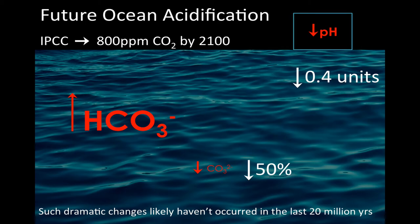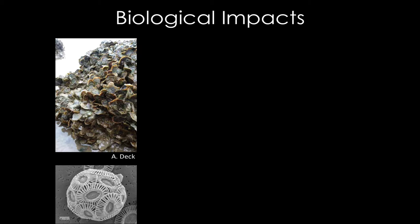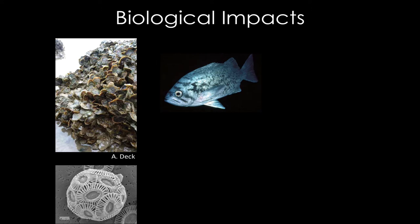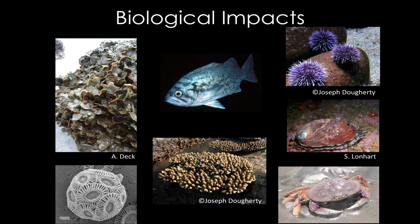We probably haven't seen acidified water like this in the last maybe 20 million years. There have been acidified conditions in the past, but the rate at which it's changing is rapid. There are a lot of organisms that need calcium carbonate and are affected by ocean acidification, including oysters, the microscopic plankton plant called the coccolithophore, fish — which have an inner ear part called an otolith made of calcium carbonate — corals, urchins, abalone, and crabs. I have some calcium carbonate objects to pass around to give you a sense of the diversity of animals affected.